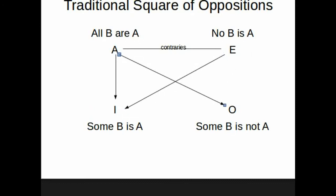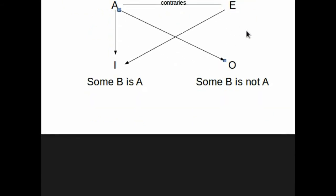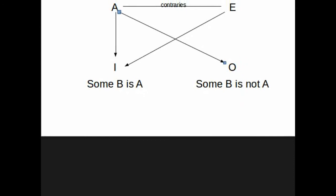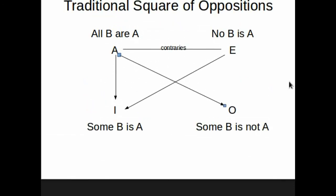As we have seen this relation between A and I, we can also see the other relation between E and O, which is similar in the sense that it's a subaltern. So, if E, no B is A, it's true, then some B is not A is true as well. So, from E, we can logically derive, infer, deduce O.